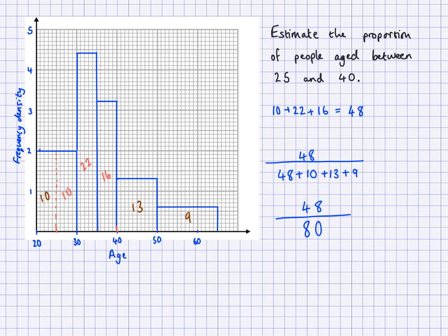And that's our proportion. Now you can simplify this — we can get 6 over 10, and that's also 3 over 5, which is 60%. So 60% of the people are between the ages 25 and 40. Notice how we used the histogram to estimate the proportion of people aged between 25 and 40. The number of people was 48 and the proportion was 48 out of the total. We found the frequencies by finding the areas of these bars.